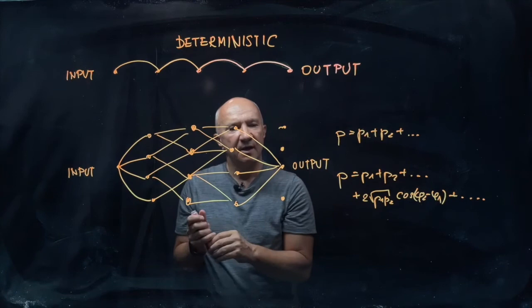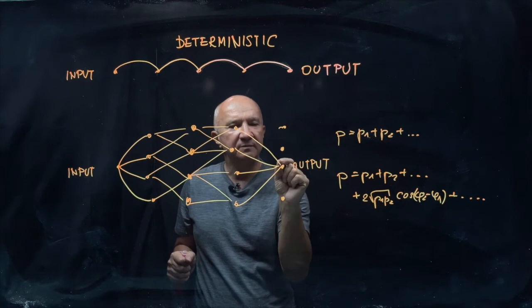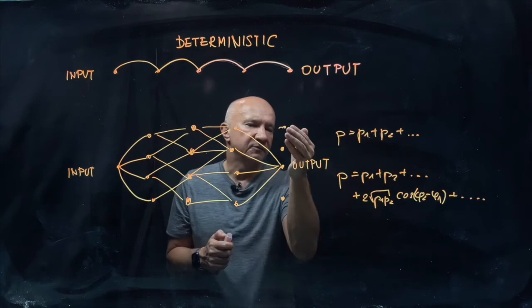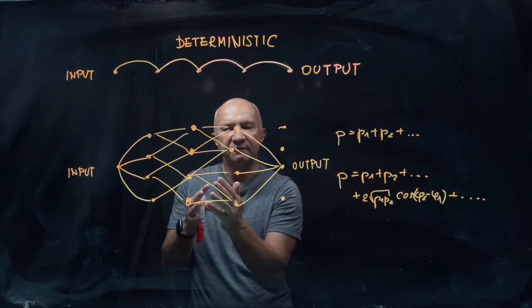And by constructing the quantum algorithm, by constructing the operations in this quantum piece of hardware, you are aiming at amplifying the probability that you will see one particular output that corresponds to the correct answer or several outputs if they correspond to the correct answer. And you use quantum interference for that.